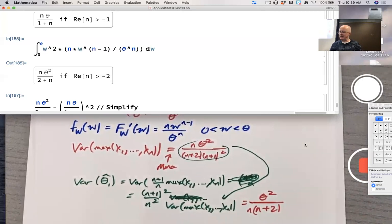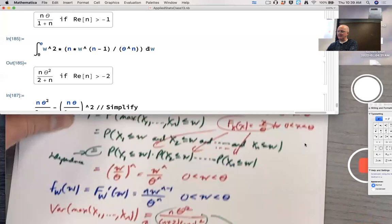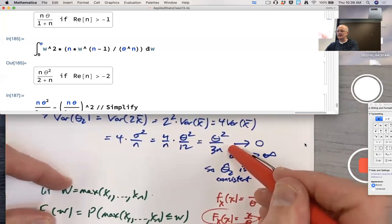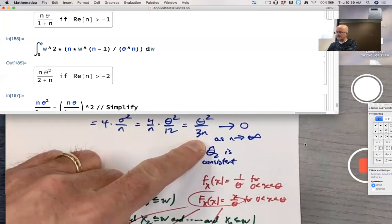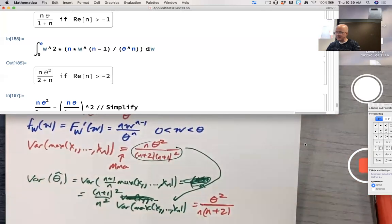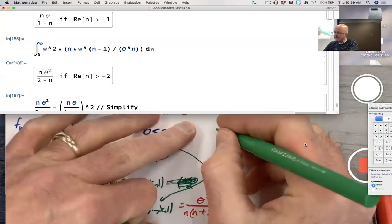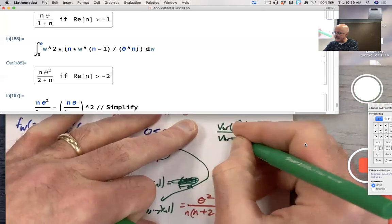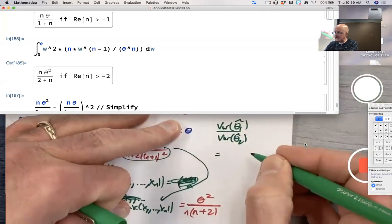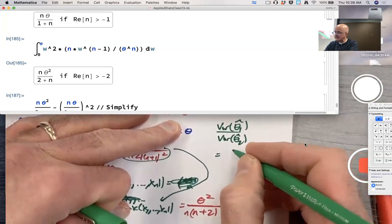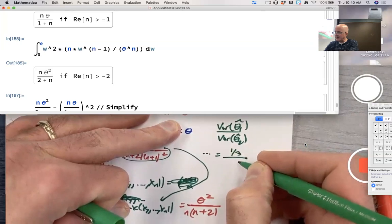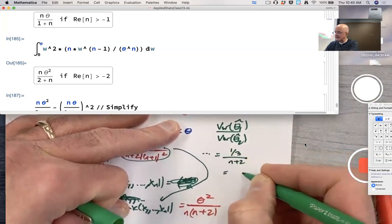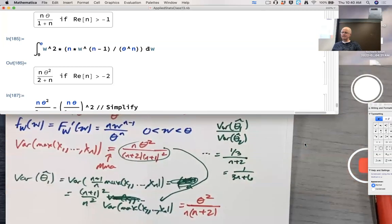Now we're really ready to calculate the relative efficiency. Take this variance and divide by that variance. The theta squareds cancel. The n's cancel, actually this n cancels with this n. The relative efficiency, almost out of room and almost out of time. Variance of theta 1 hat divided by the variance of theta 2 hat ends up equaling what? Theta squareds cancel, n cancels on the top, we end up with a one-third on the top after cancellation and on the bottom we end up with an n plus two, so it looks like it's one over three n plus six for the relative efficiency.